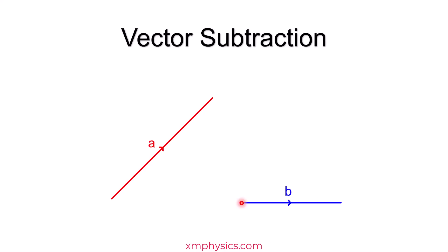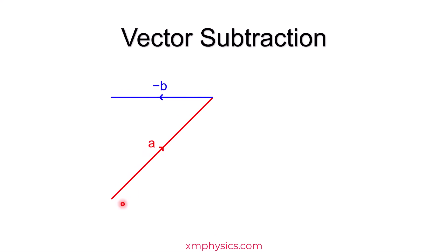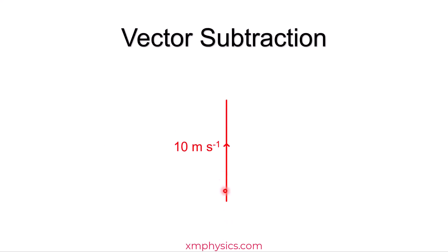So what if we want to do A minus B instead? To do A minus B, you've got to flip B around first. Now you have a vector that represents negative B. Then you join these two vectors up again — start to start, end to end — so from the very start to the very end, that vector will be A minus B. We're actually doing A plus negative B, and therefore we end up with A minus B. Clever, right?